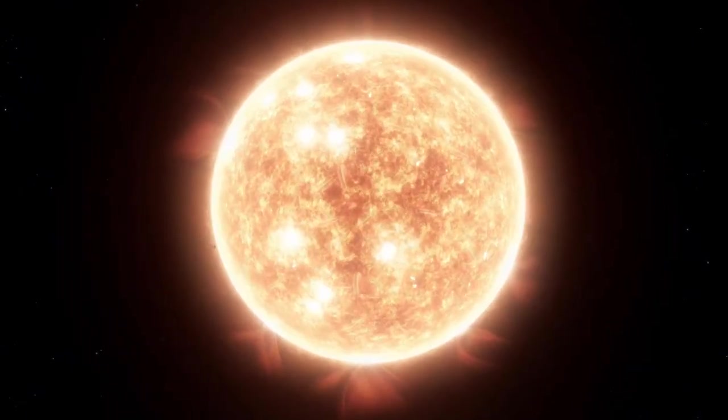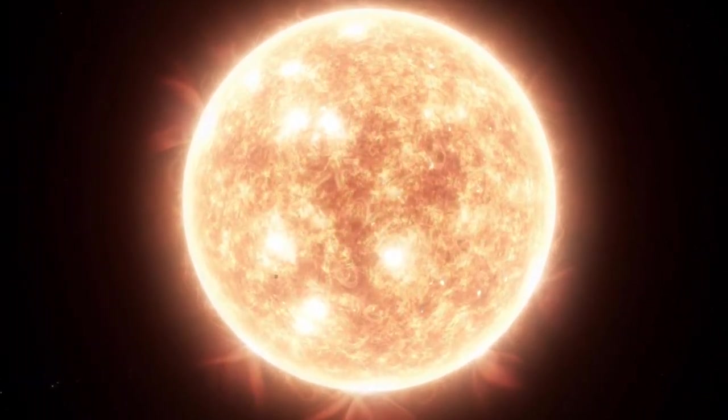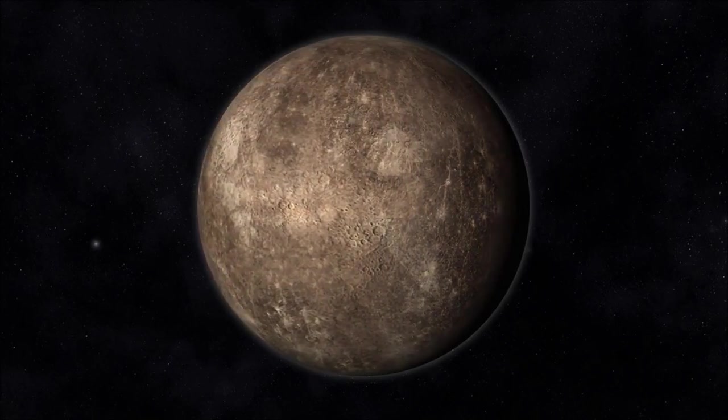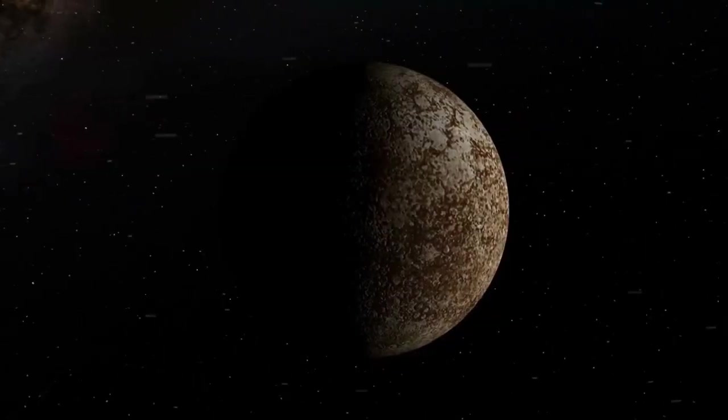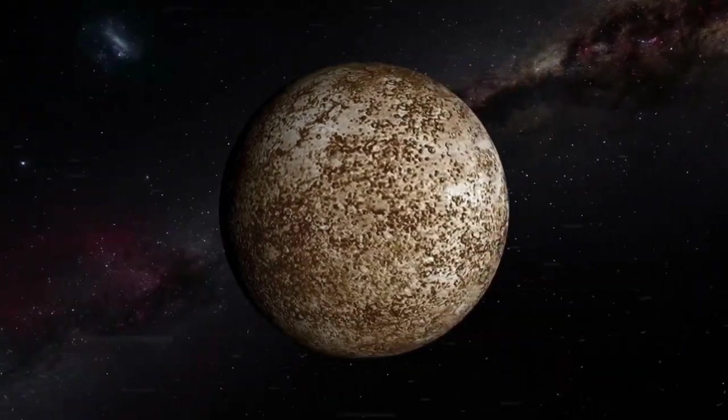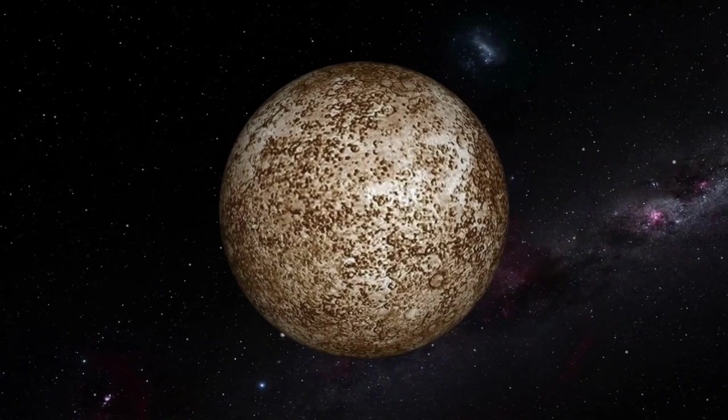Mercury is the smallest and closest planet to the sun, zipping around it in a mere 88 Earth days. Its surface is covered in craters, and its atmosphere is virtually non-existent. But what it lacks in air, it makes up for in temperature variation, ranging from a frigid minus 173 degrees to a scorching 427 degrees Celsius.